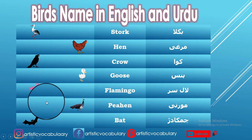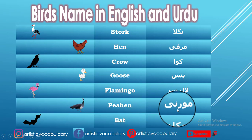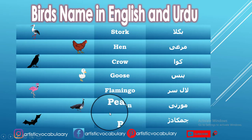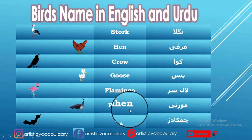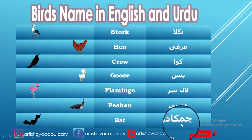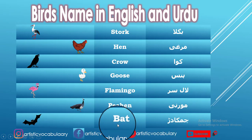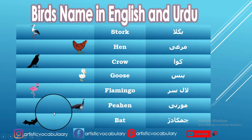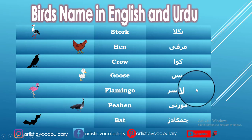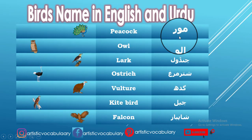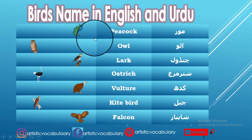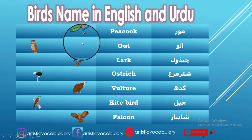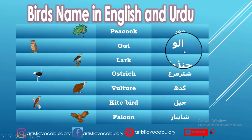Morni — in English we call it Pea hen. Chabkader — in English we call it Bat. Moor — in English we call it Peacock.